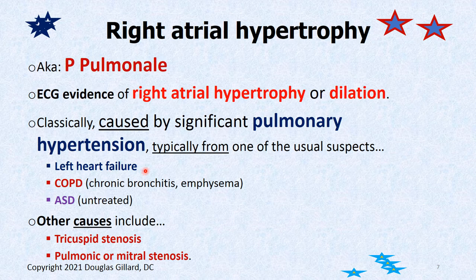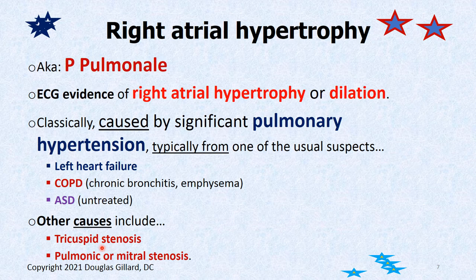Left heart failure is probably the number one cause of pulmonary hypertension — these are all downstream beaver dams from the right side of the heart. COPD is a beaver dam in the lungs. Atrial septal defect is on its way to causing Eisenmenger's syndrome. Tricuspid stenosis would affect the right atrium, because the tricuspid valve is downstream only from the right atrium. Pulmonic or mitral stenosis is another cause.